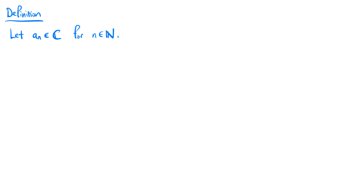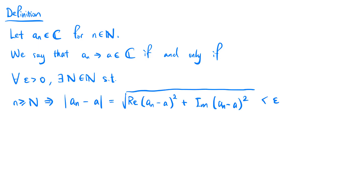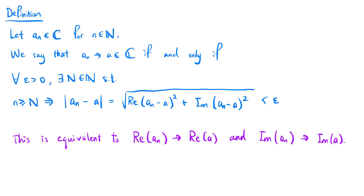Now we introduce the definition of convergence for a sequence of complex numbers. Let an be a complex sequence for natural numbers n. We say that an converges to a complex number a if and only if, for all epsilon greater than 0, there exists N a natural number such that n greater than or equal to N implies the absolute value of an minus a — which equals the square root of the real part of (an minus a) squared plus the imaginary part of (an minus a) squared — is less than epsilon. This is equivalent to the real part of an converging to the real part of a and the imaginary part of an converging to the imaginary part of a.